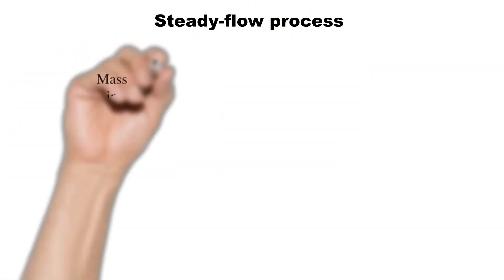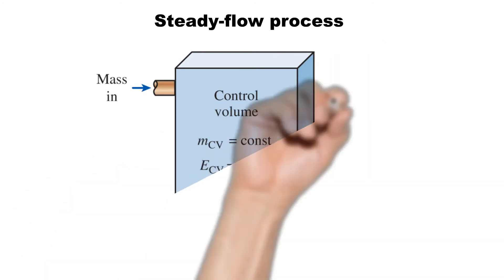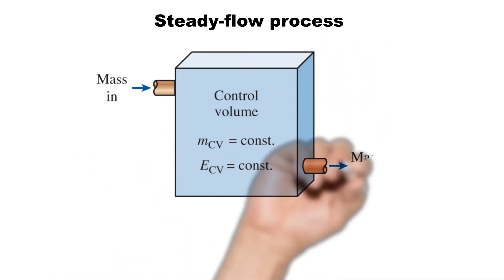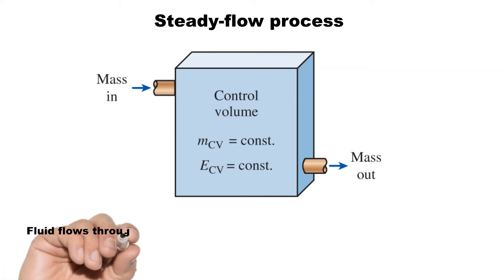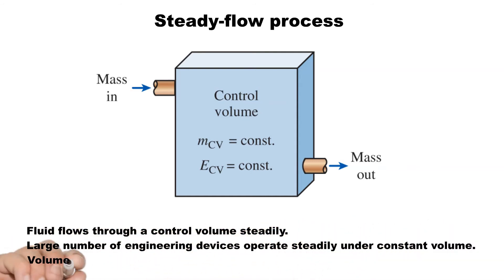In a steady flow process, fluid flows through a control volume steadily. A large number of engineering devices operate for a long time under the same conditions, and they are classified as steady flow devices. The processes involving such devices can be called steady flow processes. The volume, mass, and the total energy content of the control volume remain constant during a steady state flow process.